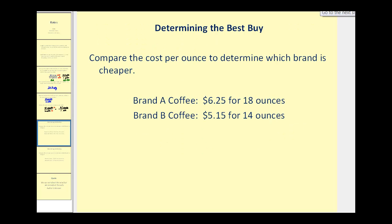Another great use of unit rates is when you're trying to determine the best buy of similar products. When you go to the store and compare brands, it's sometimes confusing because the size of the package is never the same. When comparing two brands of coffee, brand A costs $6.25 for 18 ounces, and brand B costs $5.15 for 14 ounces. If we find the unit rate, or cost per ounce, we can determine which one is the best buy.